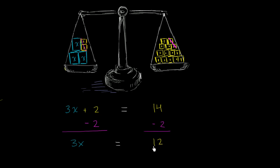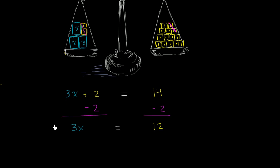This turns into a problem similar to the last video. What can we do to isolate 1x — to have only 1x on the left hand side while keeping the scale balanced? If I want 1x on the left, that's 1 third of the total x's. So I multiply the left hand side by 1 third. But to keep the scale balanced, I also have to multiply the right hand side by 1 third.